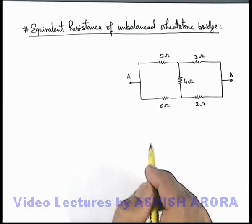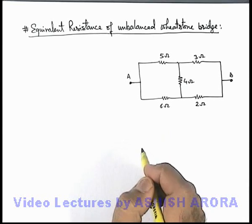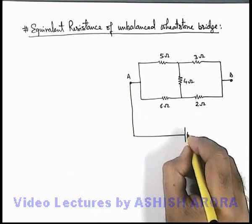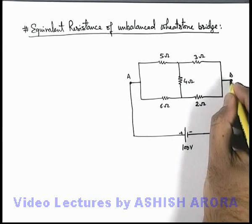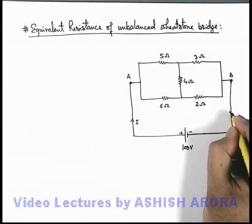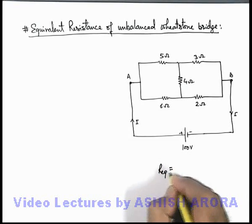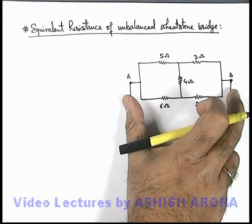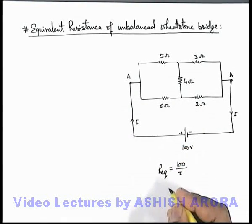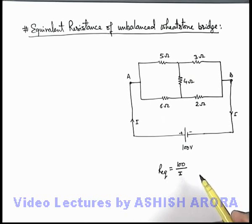To analyze or to calculate the equivalent resistance of such a circuit, we use the traditional method by applying a battery for ease of calculation. We connect a 100 volt battery across the terminals of this circuit, and on connection of the battery, we calculate the total current supplied by the battery flowing through the circuit. The equivalent resistance can be written as the total potential difference applied divided by the current flowing through the circuit, so it will be 100 divided by I. If we can calculate the value of current in terms of these resistances, we are able to get the value of equivalent resistance.